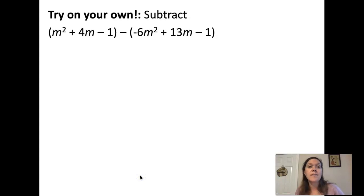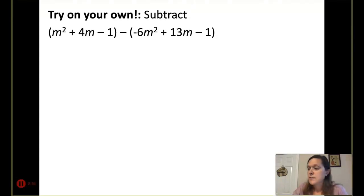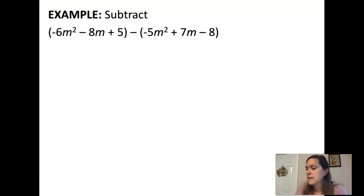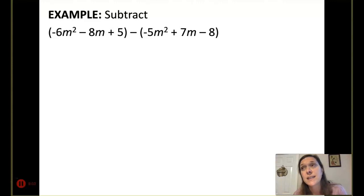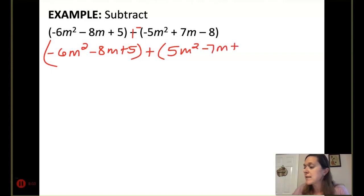The most challenging problems in this section is subtracting. The only thing complicated about subtracting is you have to consider subtracting that second polynomial. Remember, subtracting is the same as adding the opposite. I can convert this into an addition problem by converting the subtraction sign to a plus sign and taking the opposite of everything in my second polynomial. Then just add straight across. Negative 6m squared plus 5m squared is negative m squared. Negative 8m plus negative 7m would be negative 15m. 5 plus 8 is 13.